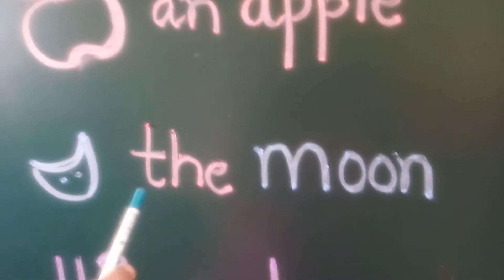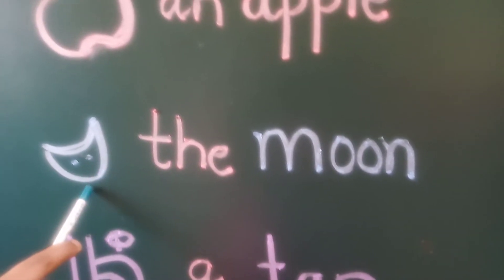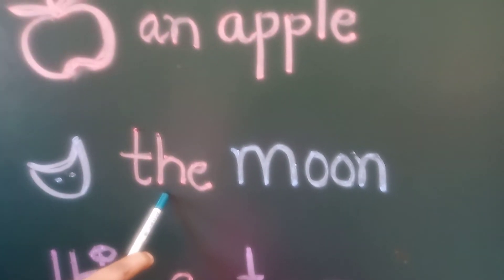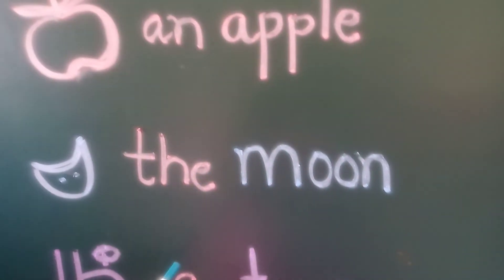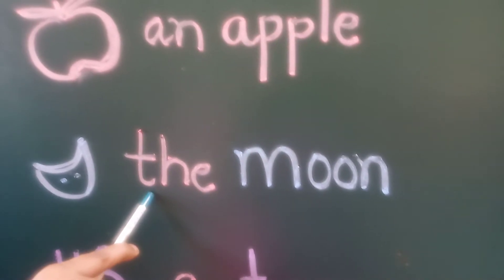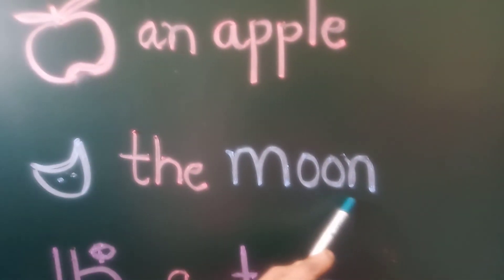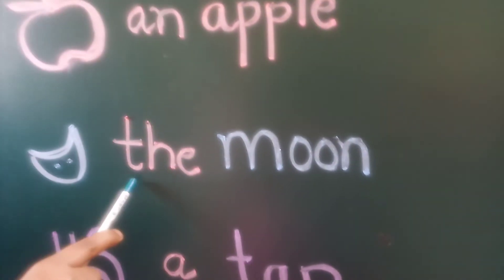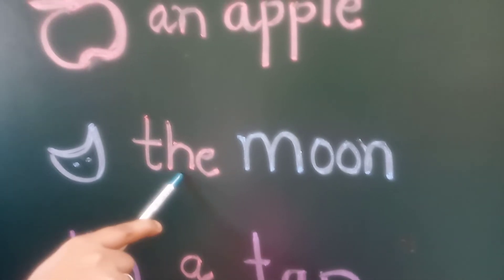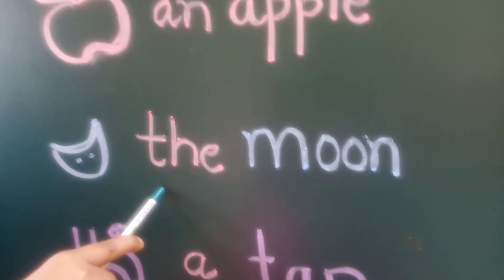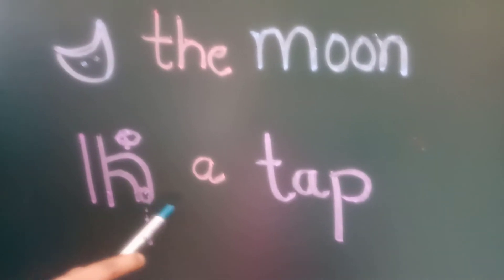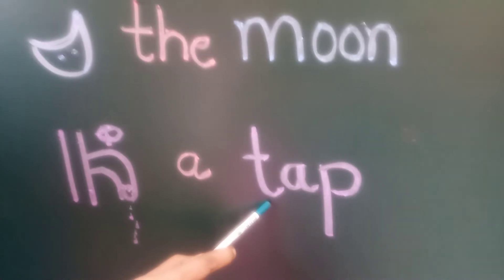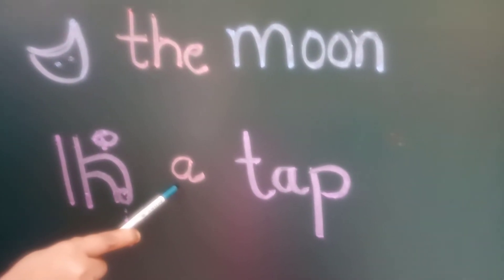Now — moon. Which picture is this? Moon. I have used 'the' here, because in front of moon and sun we use the article 'the'. M is a consonant, but here we use the article T, H, E — 'the'. Now which picture is this? Tap. T, A, P — tap. T is a consonant, so we are using the article 'a'.